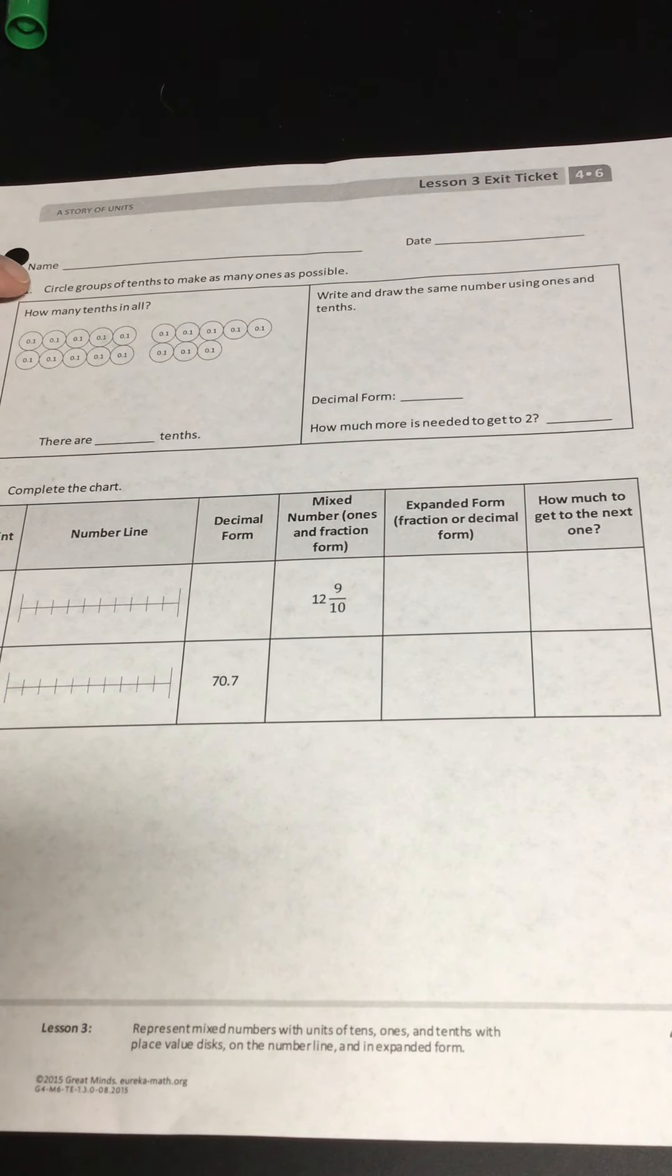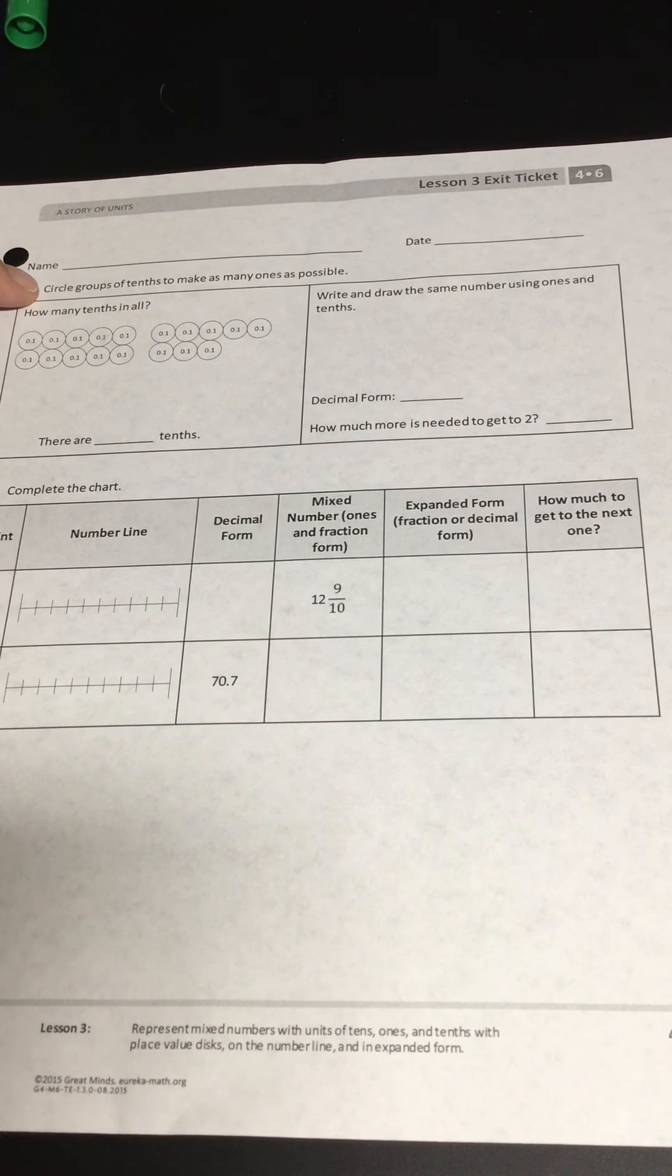Hi, fourth grade. It's Mrs. Boswell again with Lesson 3, Exit Ticket. Here in the directions for number one says, circle groups of tenths to make as many ones as possible.